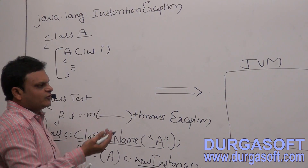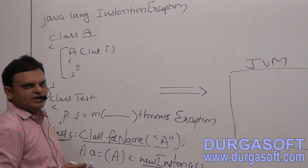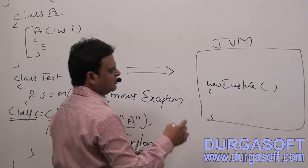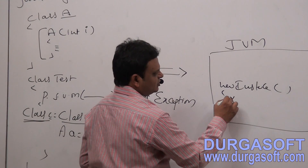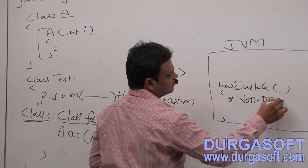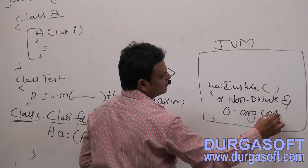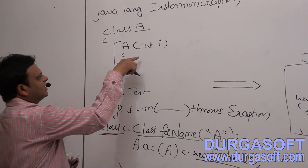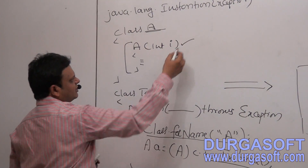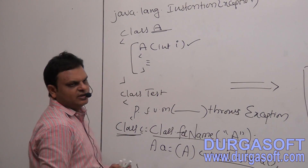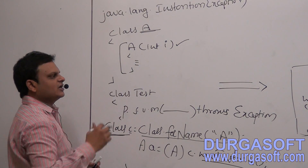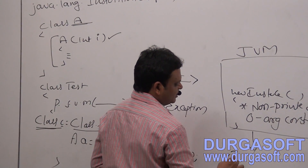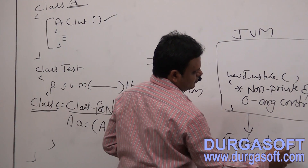For the internal concept of raising this exception, the JVM has a set of rules and regulations with respect to the newInstance() method. Its functionality is available as a predefined library. Inside this functionality, it requires a non-private and zero-argument constructor to create an object. But here, JVM is reading the constructor available in class A, which is a private parameterized constructor. It is expecting a zero-argument constructor but finds only a parameterized constructor, so JVM directly raises an InstantiationException.